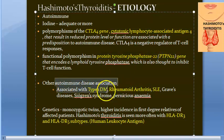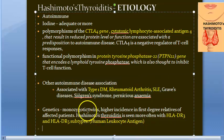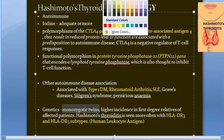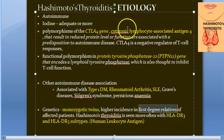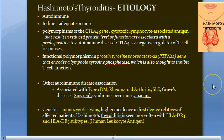Associated autoimmune diseases that can co-occur include type 1 diabetes, rheumatoid arthritis, and SLE. There are also genetic causes — in monozygotic twins and first-degree relatives you can see Hashimoto's. These people will have HLA DR3 and DR5 subtypes.